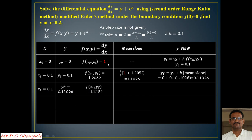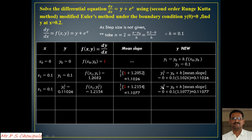We now have two slopes: the first slope at x0,y0 is 1, and the current slope is 1.2154. Taking their average: (1 + 1.2154) / 2. We only take the first slope from the previous x,y values and the current slope — not any intermediate ones. Using this mean slope in the corrector formula gives y1² = 0.11077.